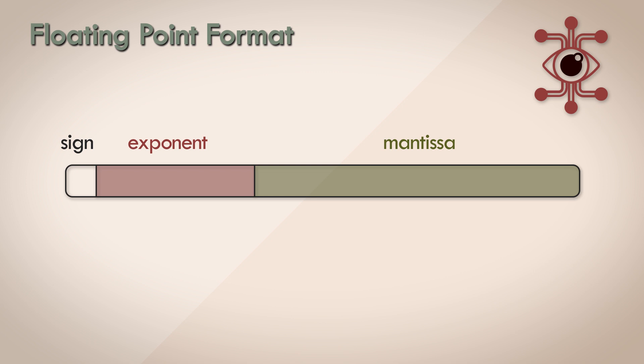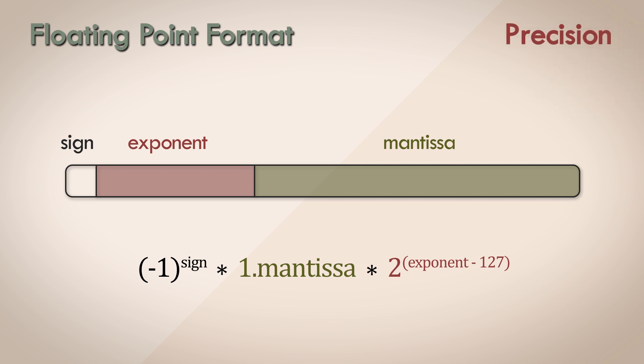We derive the resultant floating point number using this formula. Sure, this looks complicated and it's not very intuitive, but the difficult part to visualize is what this formula isn't telling you. What this formula isn't defining is the precision of the floating point numbers and the least count between them.